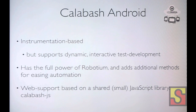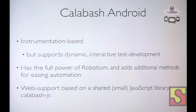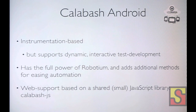A bit more about Calabash Android: it's based on instrumentation, but because you have an embedded HTTP server, you have a more dynamic experience — you can send commands from any language. You can have an interactive experience where you pop up a shell terminal and try out different test commands to see how they work with your app. It uses Robotium internally, so you have the full power of that available, and then it adds additional methods to ease testing. It's built so that it's easy to extend: if you have a particular component to interact with, you can fairly easily add new actions and build your own version.